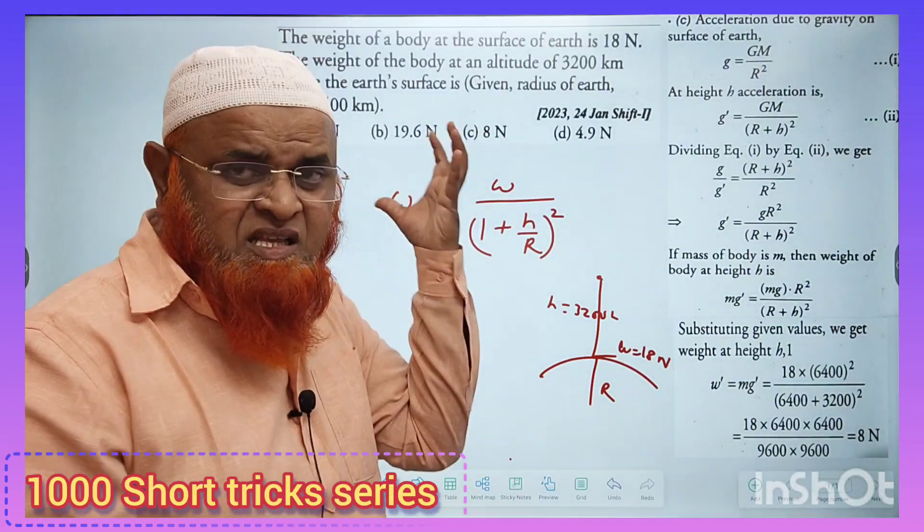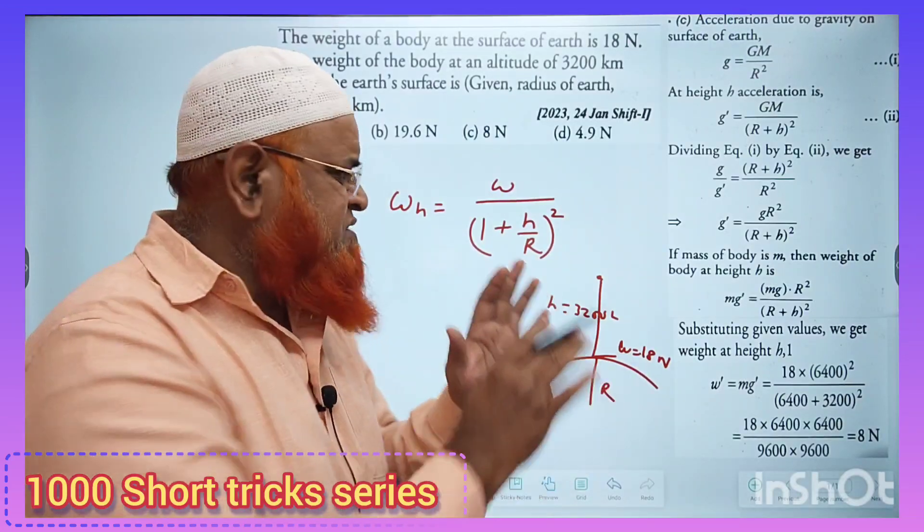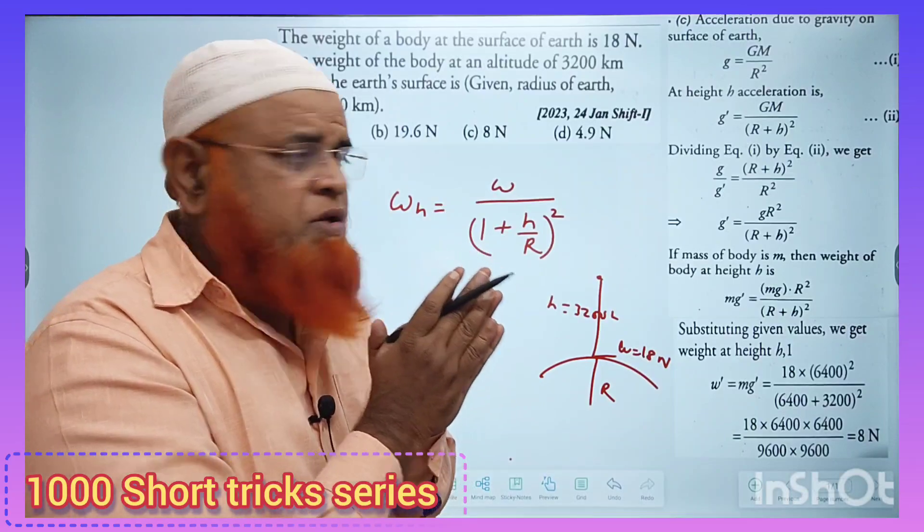So weight at certain height is equal to weight on the surface divided by 1 plus h by r whole square. That's it. This simple technique or method can make solution easier.